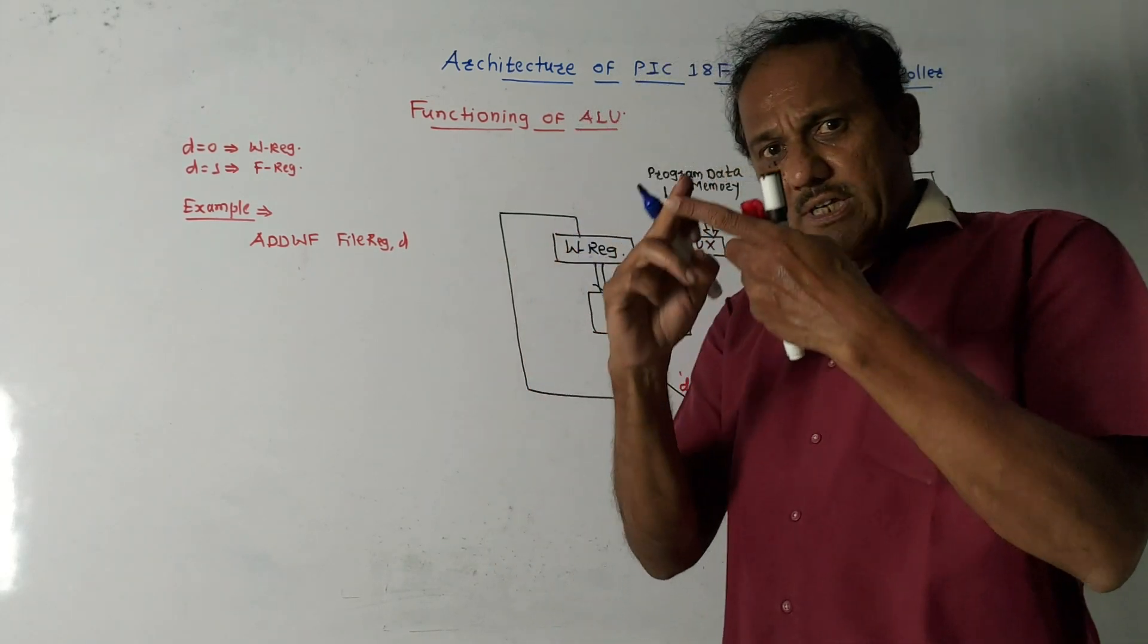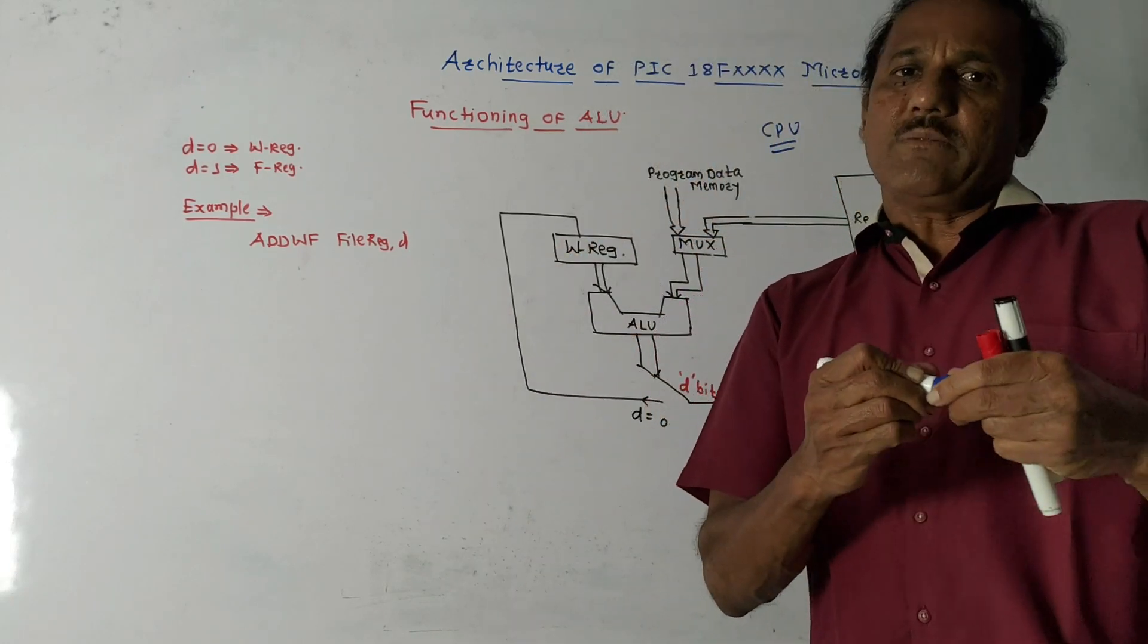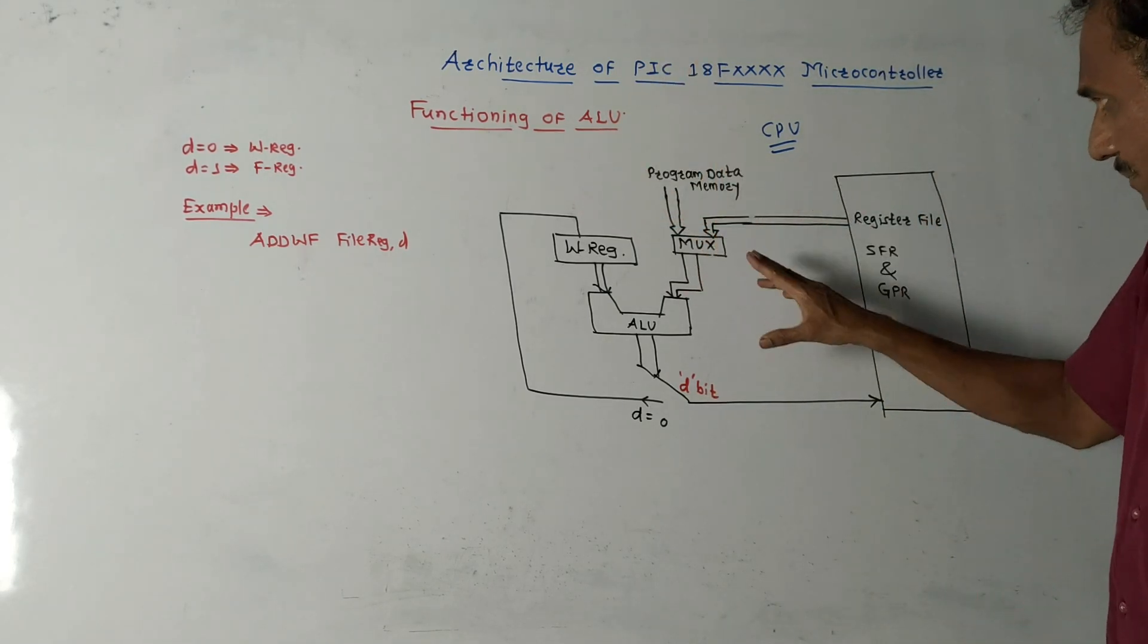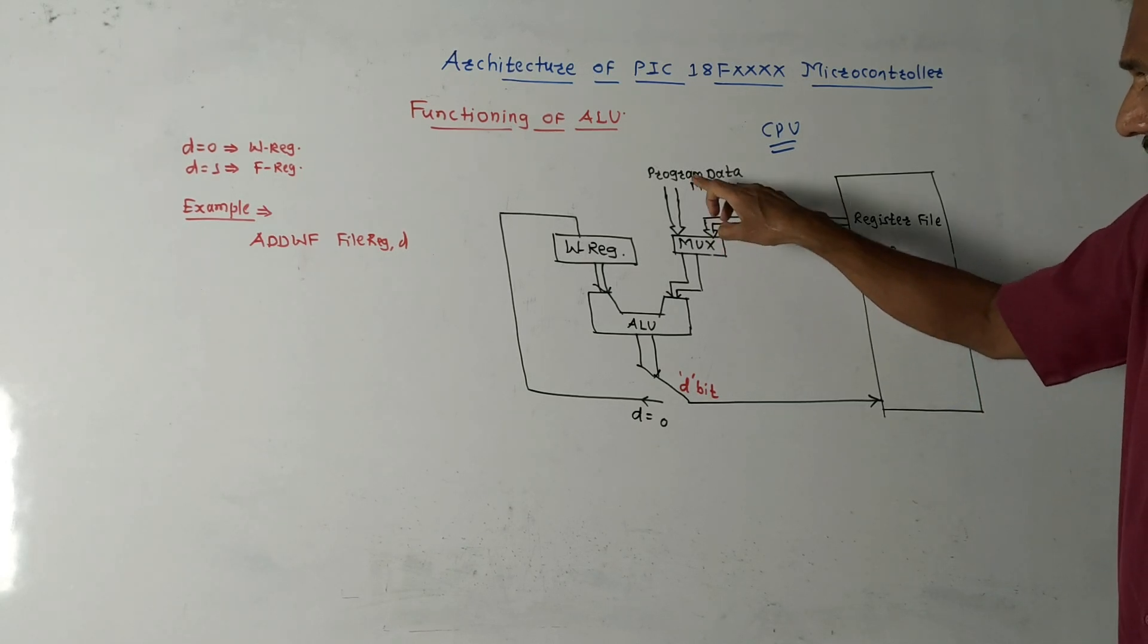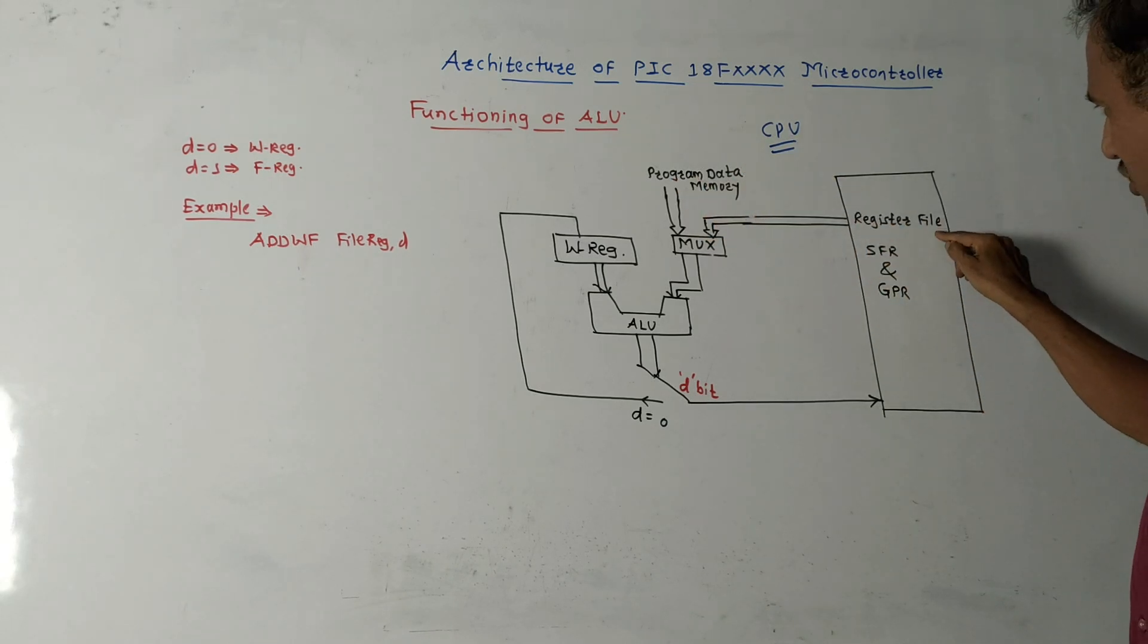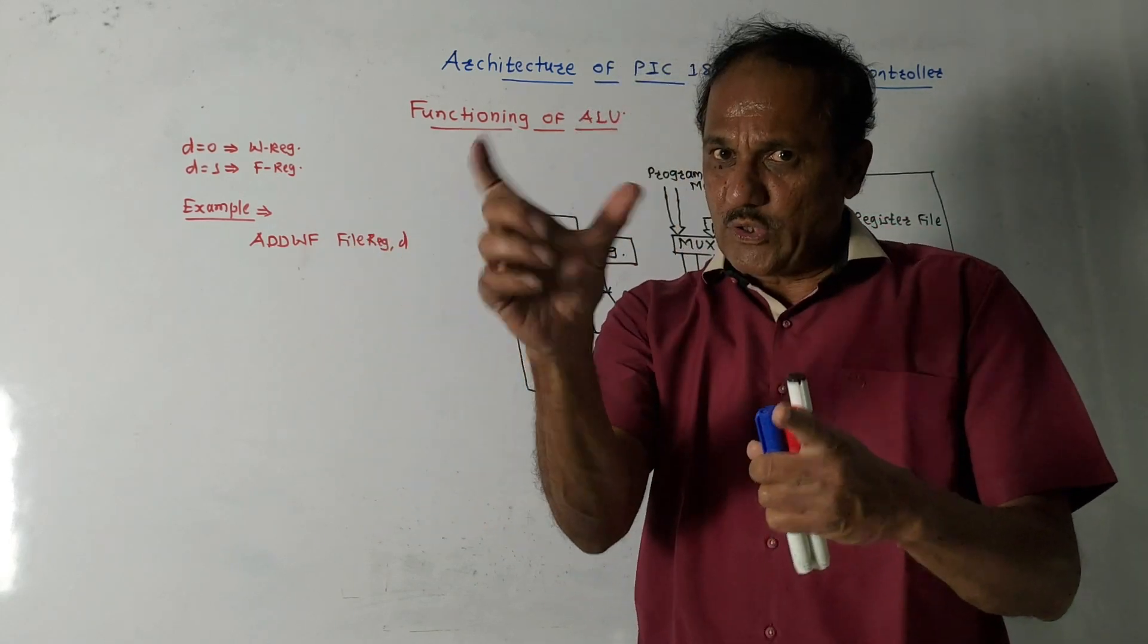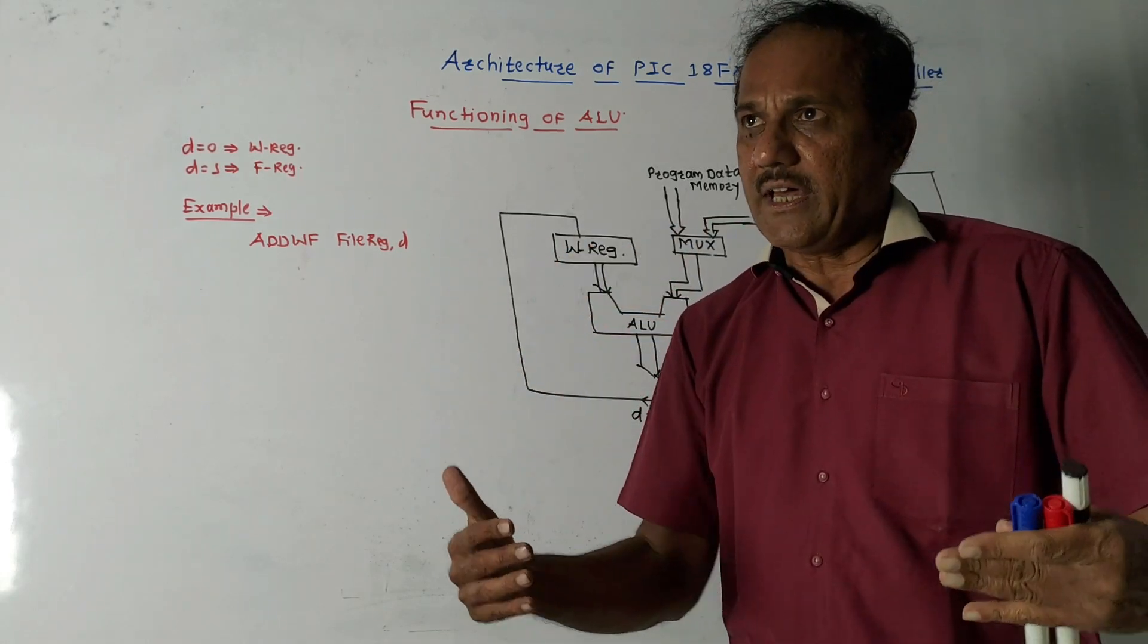As the name indicates, ALU is responsible for arithmetic operations like addition, subtraction, multiplication, division and logical operations like AND, OR and so on. It contains one multiplexer. One input to this multiplexer is from program data memory and second is from the register file. Two important registers: one is W register, working register, which is connected to ALU. Another is file register and status register.